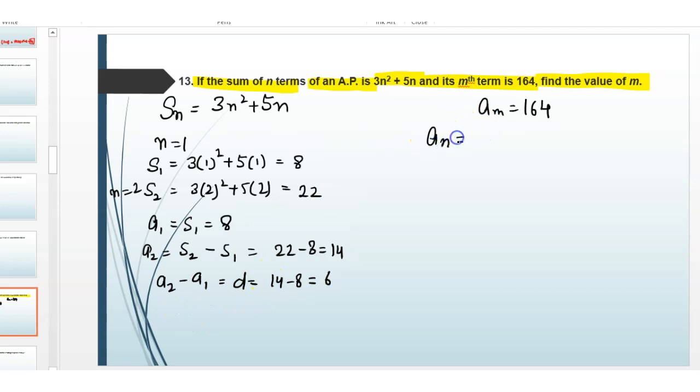Here, nth term is equal to a plus n minus 1 multiplied with d. And we have here mth term, so put n is equal to m, then a plus m minus 1 times d.